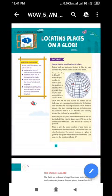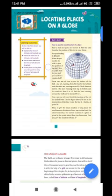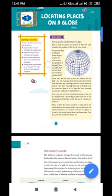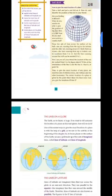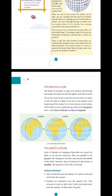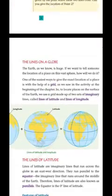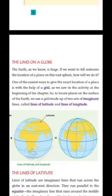Hello students, class fifth, first chapter is 'Locating Places on a Globe'. This chapter is related to finding out a particular place on a globe with the help of a grid — the lines of a globe. The Earth, as we know, is huge. If we want to tell someone the location of a place on this vast sphere, how will we do it?